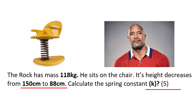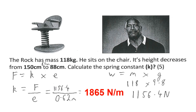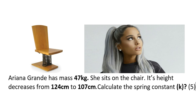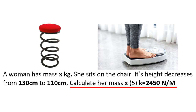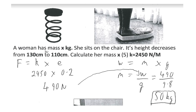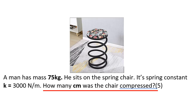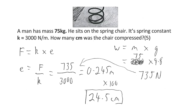Combined equation examples: use weight = mass × gravity to find the force, then substitute into the elastic potential energy equation. Always convert centimeters to meters. To find the mass from elastic potential energy, first get the force from the spring equation, then rearrange weight = mg for mass. To find extension in centimeters, multiply your final answer in meters by 100.